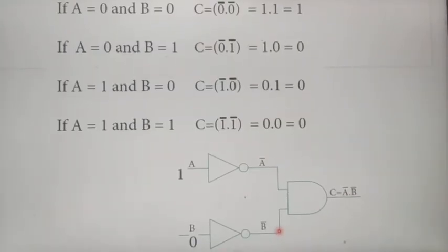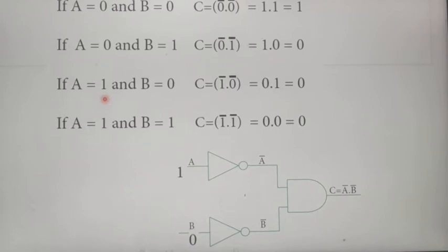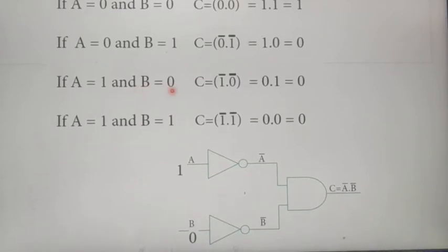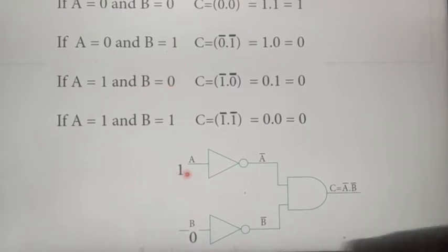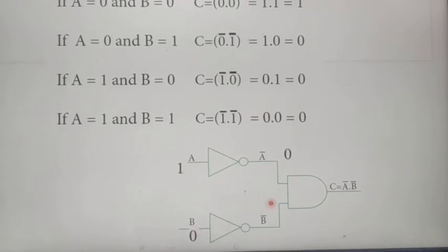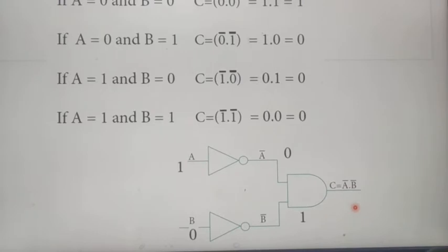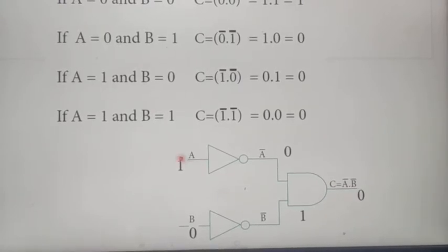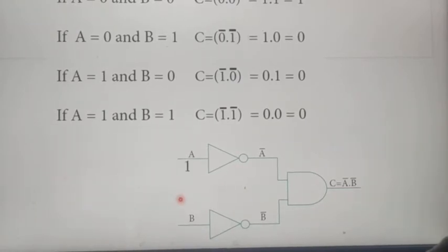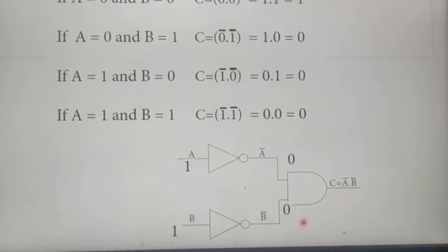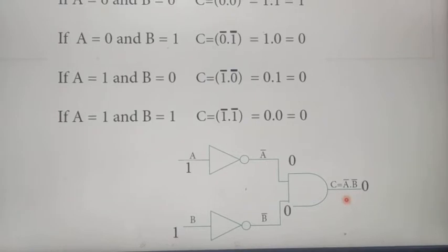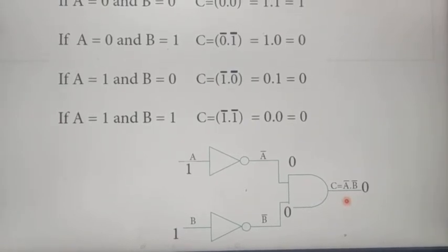Third possibility: A = 1, B = 0. Our first input 1 is inverted into 0, second input 0 is inverted into 1. So 0 AND 1 equals 0, our output is 0. Fourth possibility: both inputs are 1. First input 1 is inverted into 0, second input 1 also inverted into 0. 0 AND 0, our output is 0. So these are the various input and output possibilities of the Bubbled AND Gate.